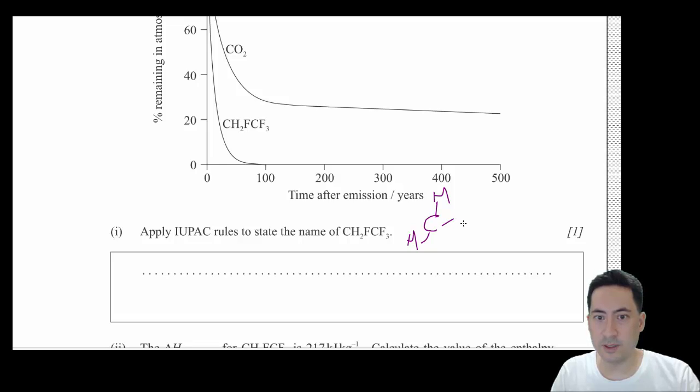And then there's an F and there's a C and an F3. So the F must be coming off here and the F must be off here. That's the only way I can see that you can draw it so that there's four bonds.